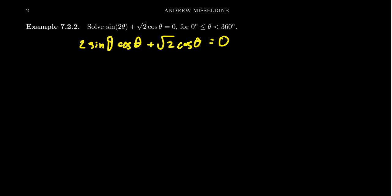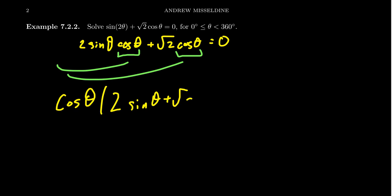Let's try to factor the left-hand side if that's possible. Looking at the left-hand side, I do see there's a common factor of cosine in both terms. Let's factor that out. Once we take the cosine theta out, that leaves behind 2 sine theta plus the square root of 2.